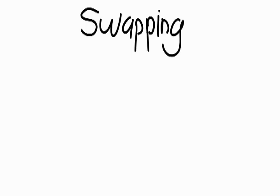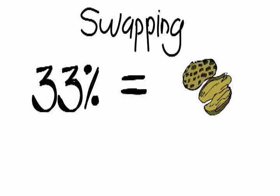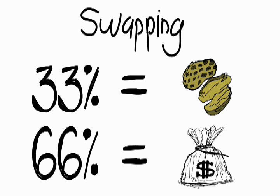So by swapping, you have a 33% chance of winning a peanut, and a 66% chance of winning the bag of cash. Therefore, you should always switch, because switching gives you 66% chance of winning the bag of cash, versus 33% chance of winning a peanut.